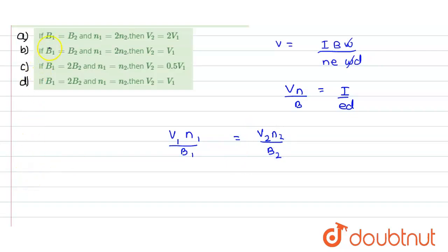We can just write it like this. Now in the A and B option B1 and B2 are same. Now if we just calculate the A and the B option we put the value of B1 and B2 equals to B. Then we can say that V1 into what is the value of N1? It is twice of N2. So 2N2 divided by B equals V2 into N2 divided by B. So from this we can say that V2 should be equals to twice of V1. So that means A would be the correct and B would be wrong.